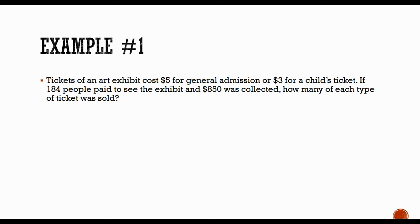Here's an example of one type you might see. Tickets at an art exhibit cost $5 for general admission and $3 for a child's ticket. If 184 people paid to see the exhibit and $850 was collected, how many of each type of ticket was sold? We read through the problem and it looks like we have two different tickets: general admission tickets and children's tickets.